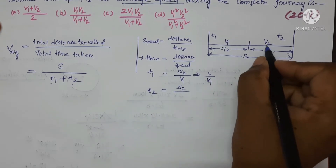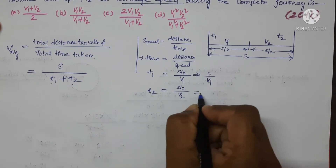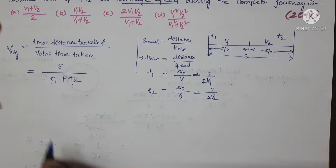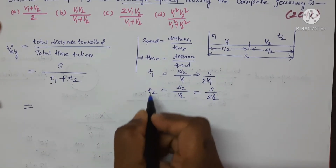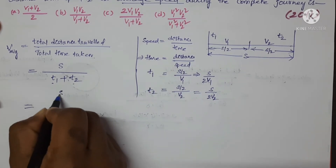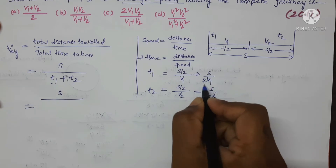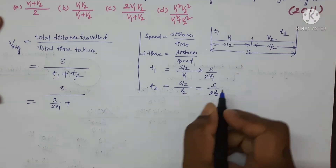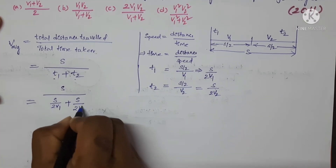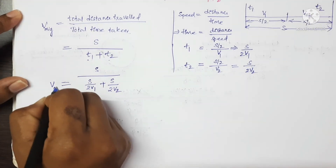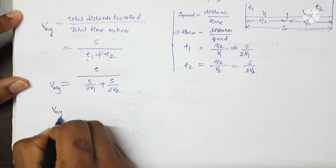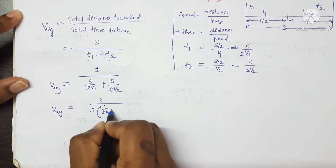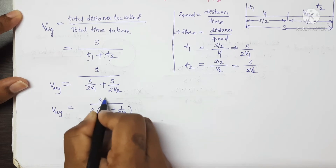For the second half of the distance, t2: the distance is s/2 and the speed is v2, so t2 = s/(2v2). Now substitute the values of t1 and t2 into the average speed equation. We get: average speed = s upon [s/(2v1) + s/(2v2)].